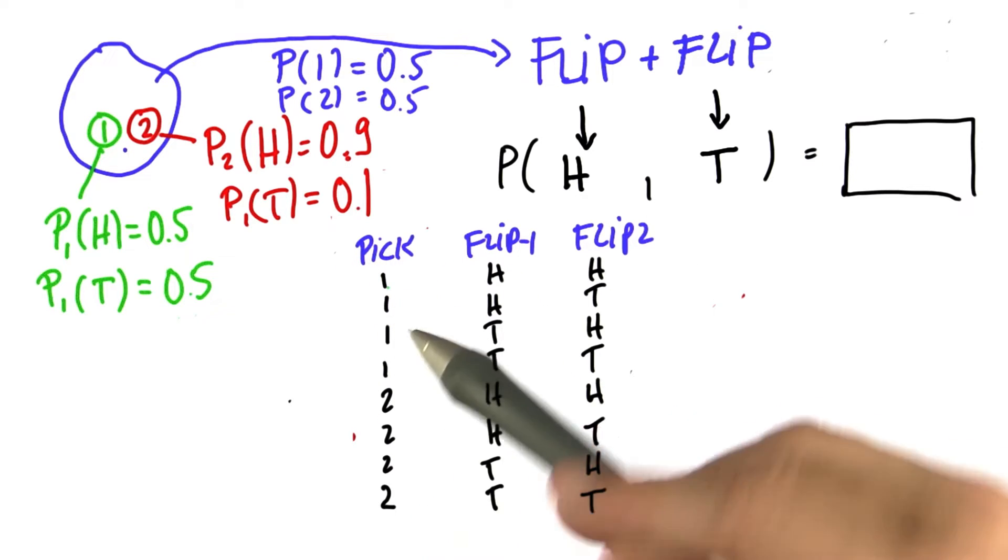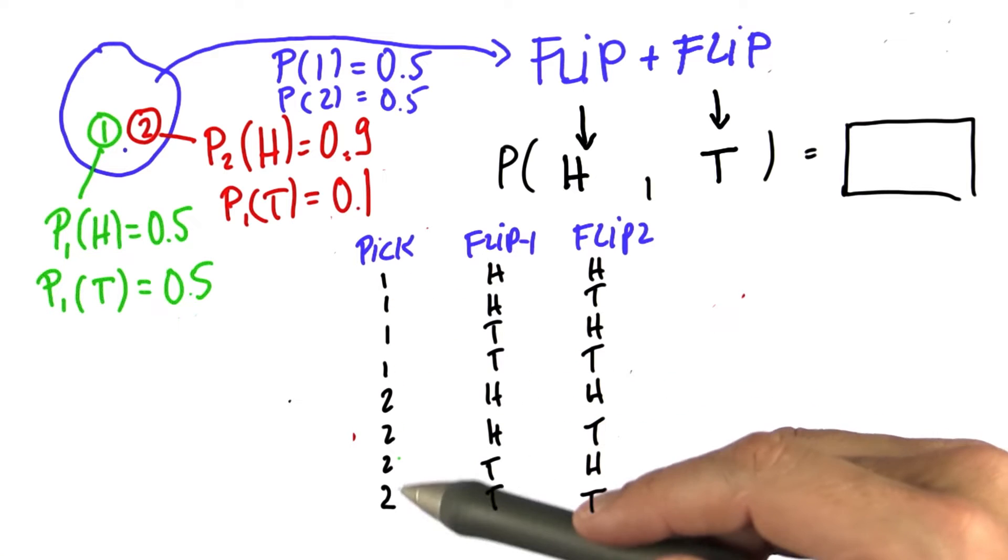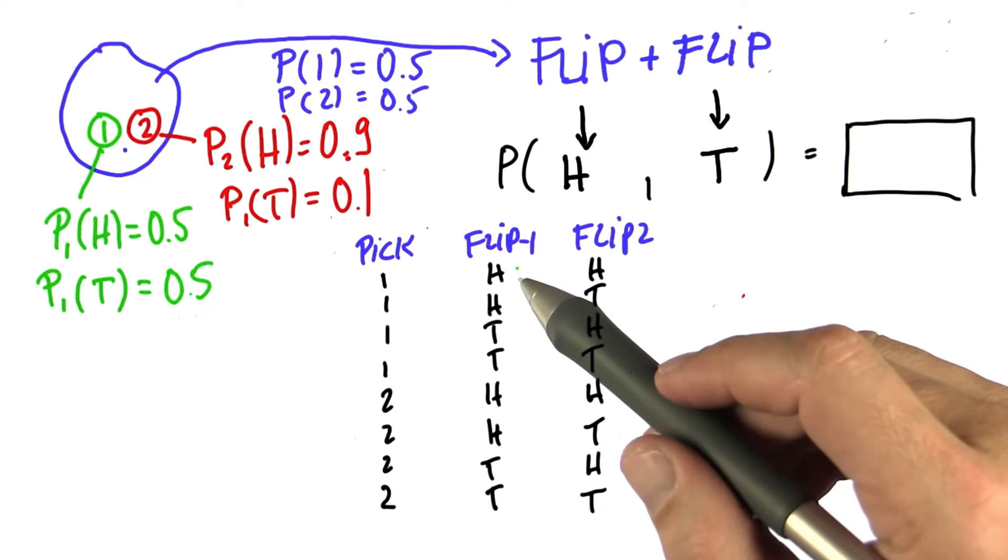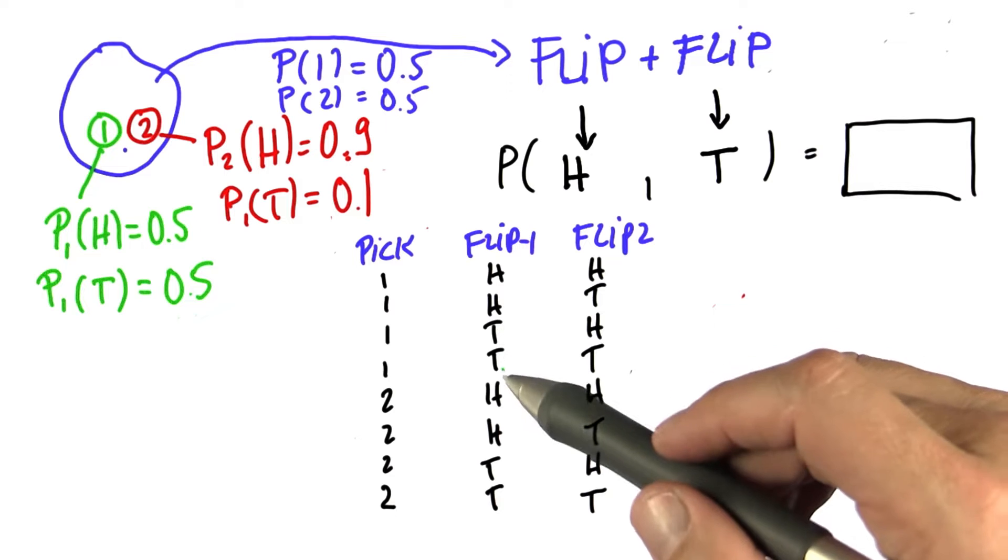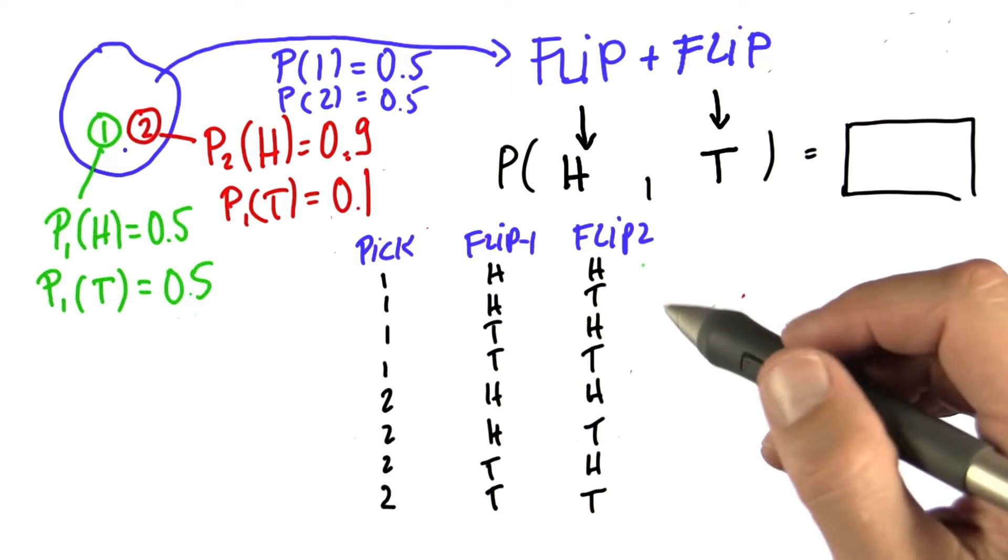We take an initial pick of a coin which you can take coin one or coin two with equal probability, and then we flip it for the first time and there's heads or tails outcomes, and we flip it for the second time with a second outcome.